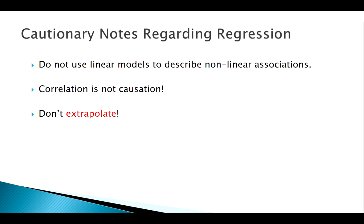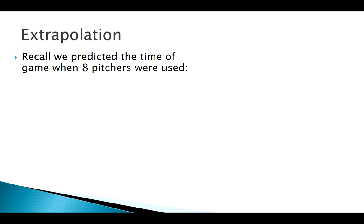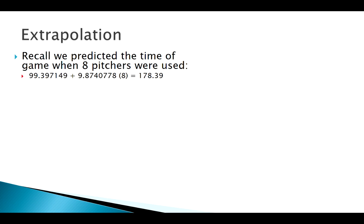But the things that we're going to introduce here, we don't want to do what's called extrapolation, and we also want to be aware of influential points. So what is this thing called extrapolation? Well remember in our example we use our regression equation to say, well how long is this game going to be if we use eight pitchers? We found it was about 180 minutes, about three hours.